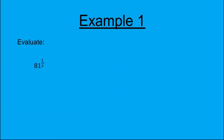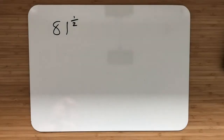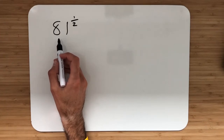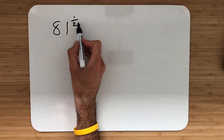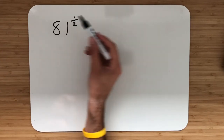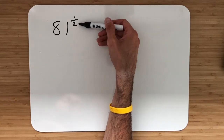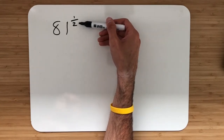Example 1: evaluate 81 to the power of one half. To evaluate 81 to the power of a half, I need to change it back into a root — take the fractional index and move it back. In the fraction, the top number stays, and the bottom number strays to the outside of the root.